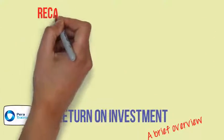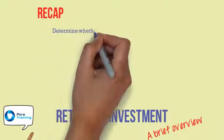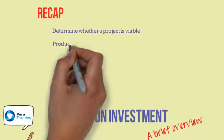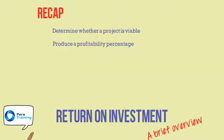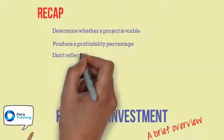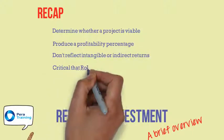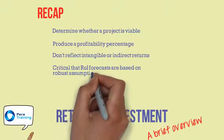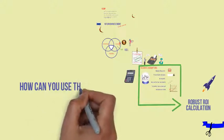To recap then. ROI calculations determine whether an idea or project is viable. They help compare different projects by producing a profitability percentage. They don't reflect intangible or indirect returns. Most importantly, it's critical ROI forecasts are based on robust assumptions if they are to be accurate. So how can you use this in your world?